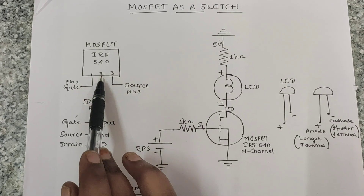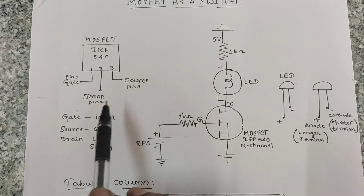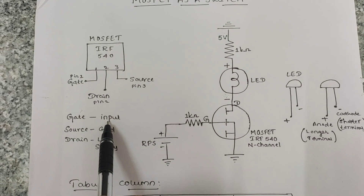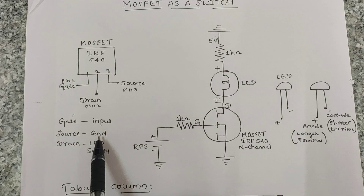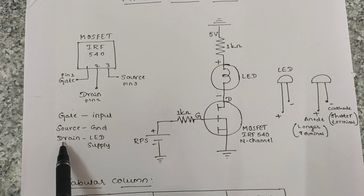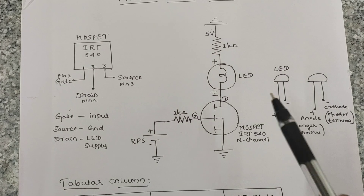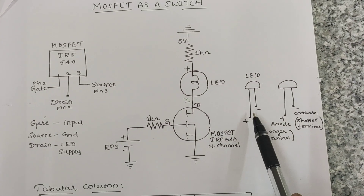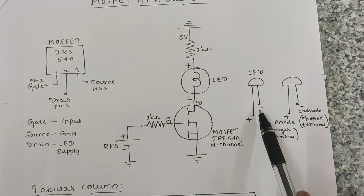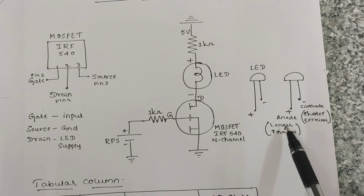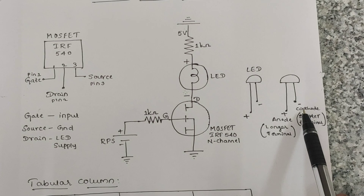Pin number 1 is Gate, pin number 2 is Drain, and pin number 3 is Source. The Gate terminal is used to give the input. LED has 2 terminals: positive and negative. The longer terminal is the anode and the shorter terminal is the cathode.